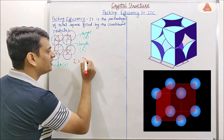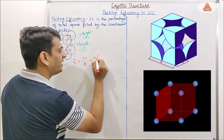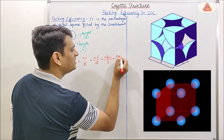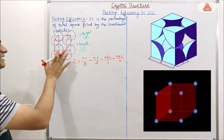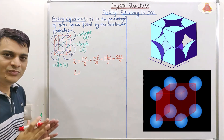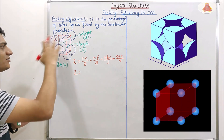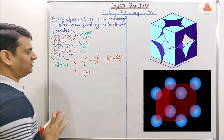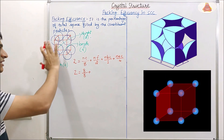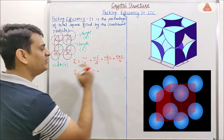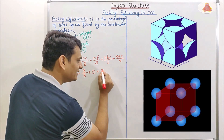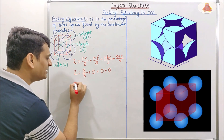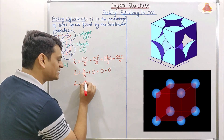Z is equal to NC/8 plus NF/2 plus NBC/1 plus NEC/4. In this unit cell, Z equals NC — the number of constituent particles present in the corners. Here 8 corners are present and all 8 corners have constituent particles, so it will be 8/8. Number of constituent particles present in the faces is 0, so NF = 0. NBC, the number of particles in the body center, is also 0, and NEC, the number of particles in the edge center, is also 0.